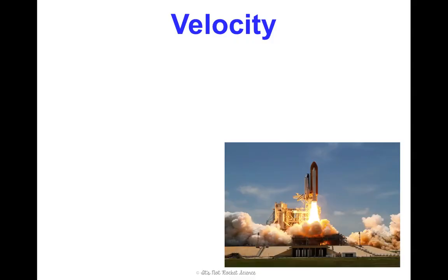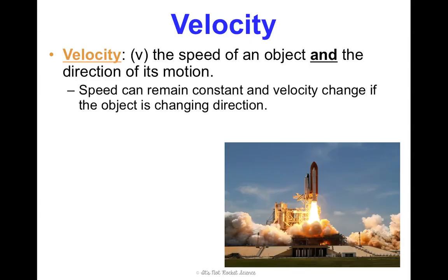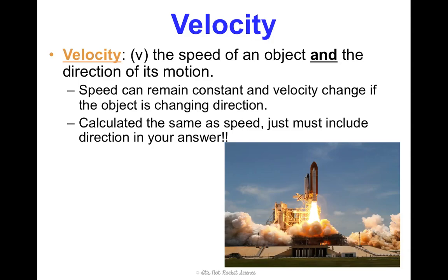Alright, one more thing before I have you pause and practice is velocity. This is another way of measuring motion. So, in an equation, we use V to represent velocity, and it is the speed of an object and the direction of its motion. So, speed and direction. So, an object can be at a constant speed. Like, you can be on cruise control in your car, but your velocity is technically changing if you make a turn or you change direction in any way. And that'll be important in our next concept. One other thing that's kind of nice is that this is calculated the exact same way as speed. All that you do differently is include a direction in your answer. So, instead of S equals D over T, it's just V equals D over T. So, that's kind of nice, because we're not learning any new equations.